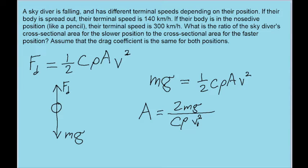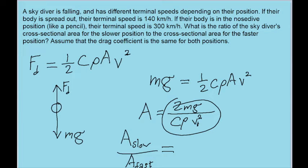And the problem wants us to find the ratio of the area for the slow position to the area for the fast position. So we want the ratio of this equation with the slower speed to this equation with the faster speed.